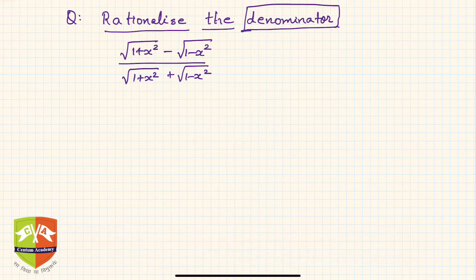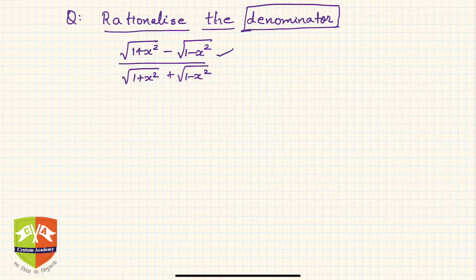Hence we are saying rationalize the denominator, and the expression here is: (√(1+x²) - √(1-x²)) divided by (√(1+x²) + √(1-x²)). You know how to rationalize a surd, and especially if it is a compound surd — you can see this is a compound surd, a mix of two surds.